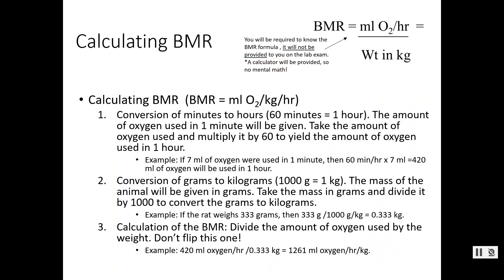We can mathematically calculate BMR. The formula gives us milliliters of oxygen per kilogram per hour. This formula will not be given to you on the exam, so you need to memorize it. You will have access to a calculator, so you don't need to do long division by hand, but you do need to know how to set up these problems and punch in the numbers correctly.